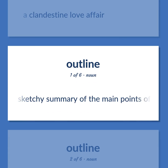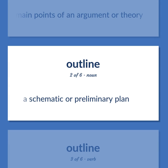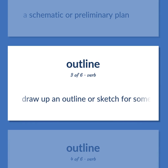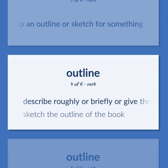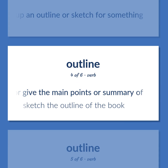Outline: A sketchy summary of the main points of an argument or theory. A schematic or preliminary plan. Draw up an outline or sketch for something. Describe roughly or briefly, or give the main points or summary of. Sketch the outline of the book.